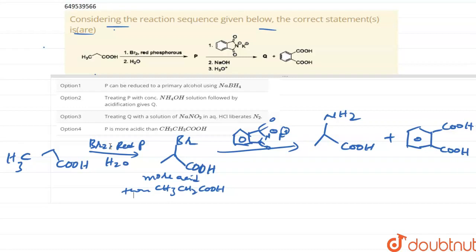P can be reduced to a primary alcohol using NaBH4. This one is the wrong statement. Why? Because P is this compound, and it can't reduce to primary alcohol because it doesn't have primary alcohol, it has carboxylic acid.